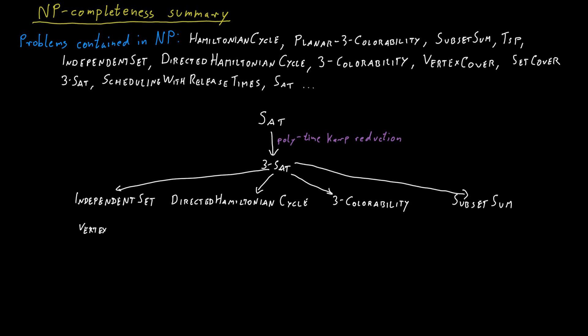And we reduced independent set to vertex cover and vertex cover to set cover. We also reduced directed Hamiltonian cycle to Hamiltonian cycle. We reduced Hamiltonian cycle to TSP. We reduced graph three-coloring to planar three-coloring and we reduced subset sum to scheduling with release times.